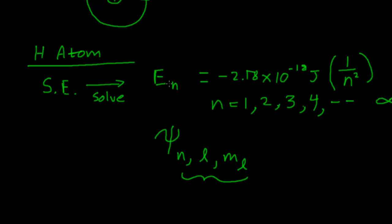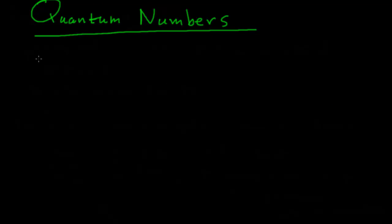For a particular energy, you have a particular label n for that wave function. The wave function tells you where you're likely to find the hydrogen atom's electron — whether it's orbiting in a circle or some more complicated shape. These numbers n, L, and M-sub-L are called quantum numbers, and we'll learn more about them in just a minute.